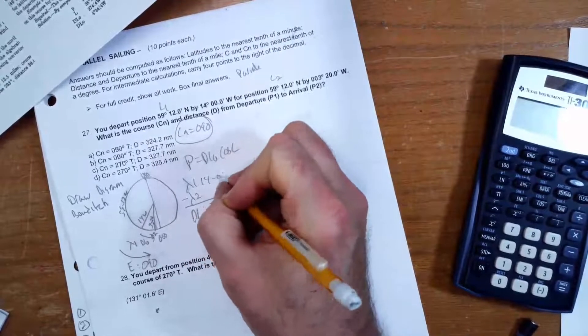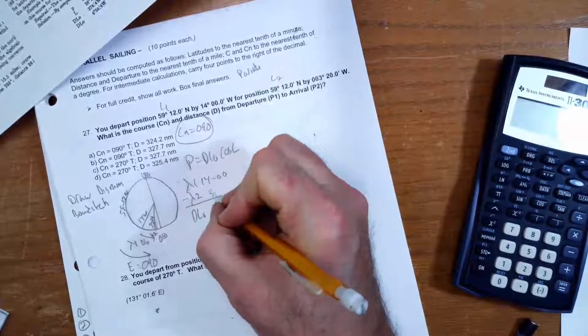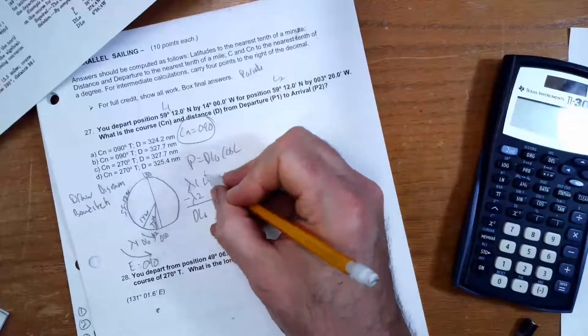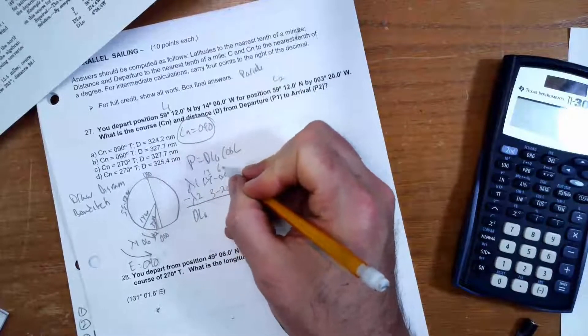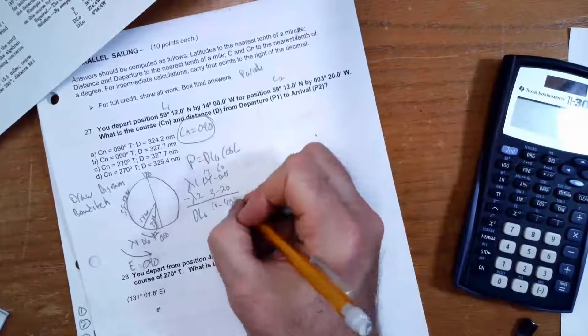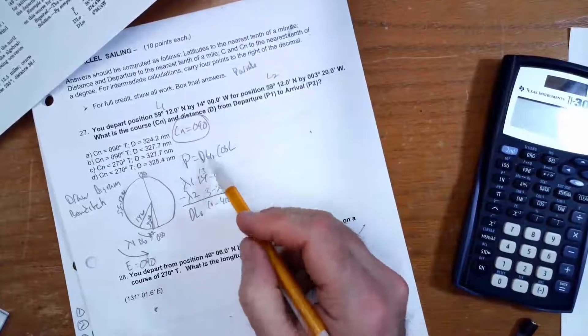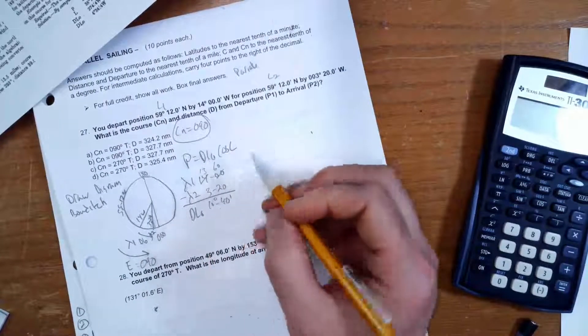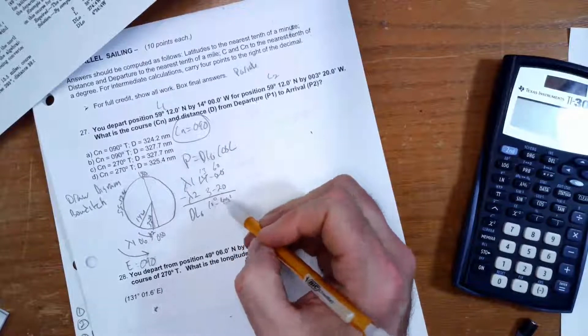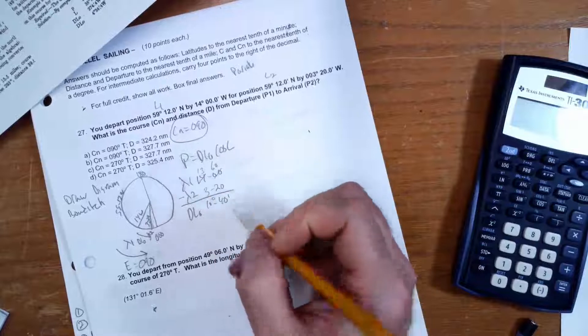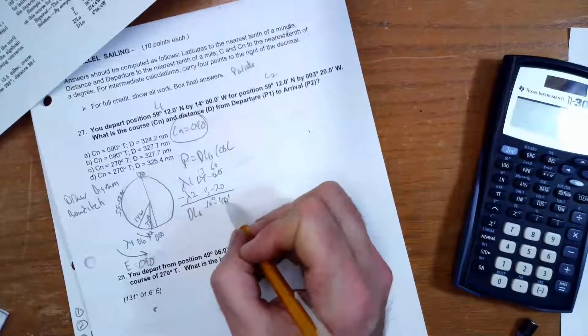So longitude 1 was 14°00', longitude 2 is 3°20'. So I'm going to subtract 3°20' from 14°, I can just make that 13°, that becomes 60', so that's 10°40'. And that's what I'm going to stick up into there, but I got a problem. That's 10°40' of arc, I need that to either be degrees or minutes.